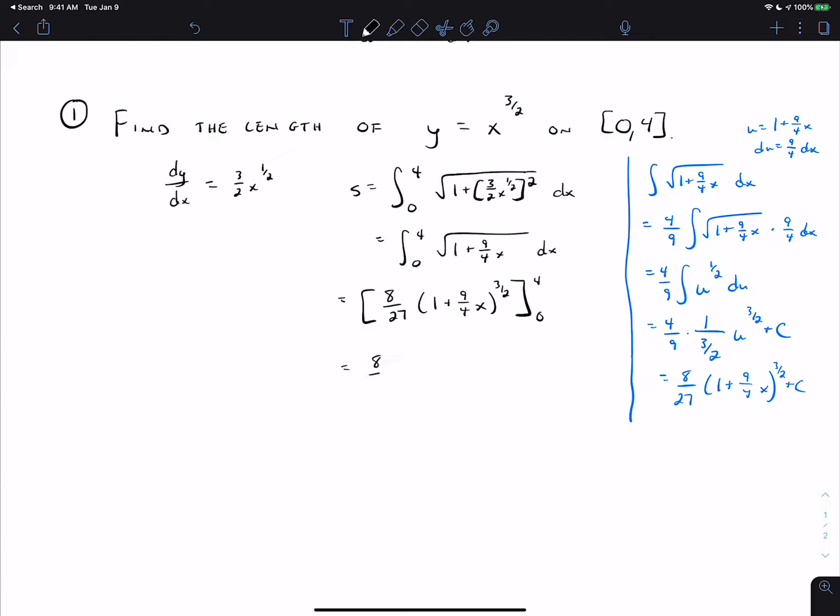We'll plug in 4, plug in 0, and subtract. If I plug in 4, I get 10 to the 3 halves. If I plug in 0, I get 1 to the 3 halves.